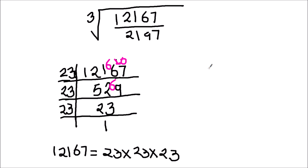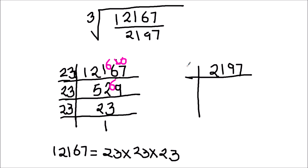Now let's find the prime factors of the denominator 2197. So 2197 is not divisible by 2, 3, 5, 7, or 11. So we'll divide it by 13. Here we have 13 times 1 as 13, then we have a remainder of 8 here. It becomes 89.